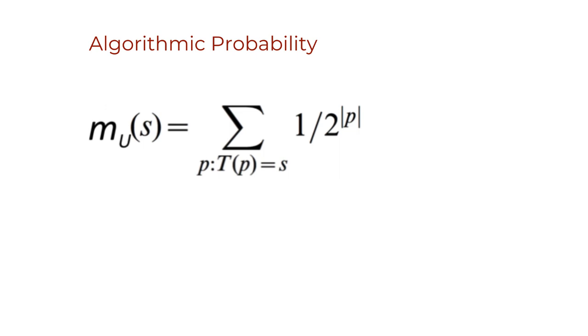In contrast, Chaitin's omega can help calculate M, but it does not produce algorithmic probability itself.